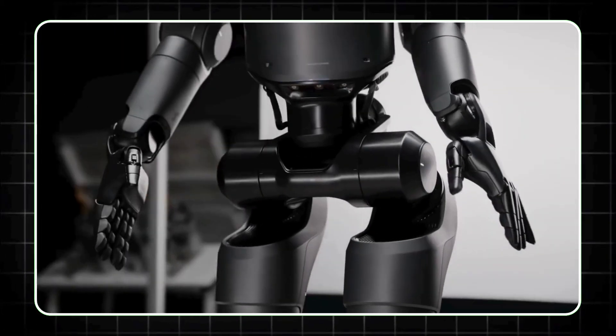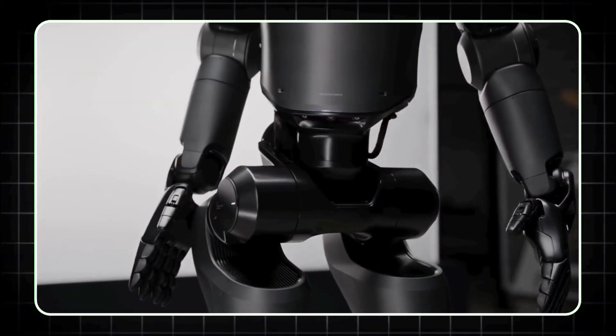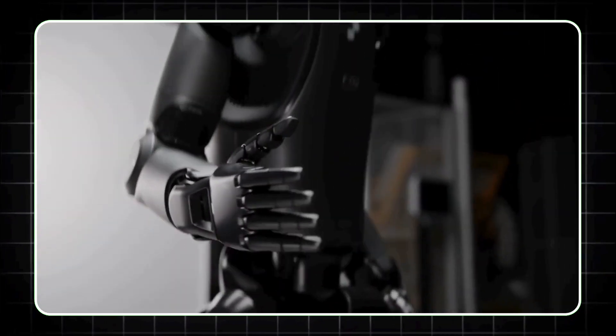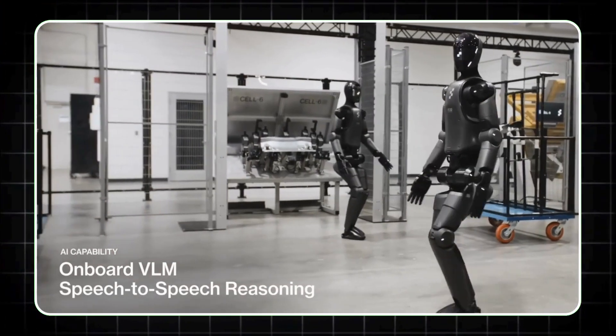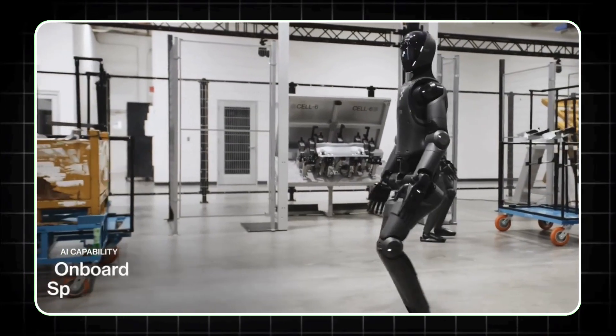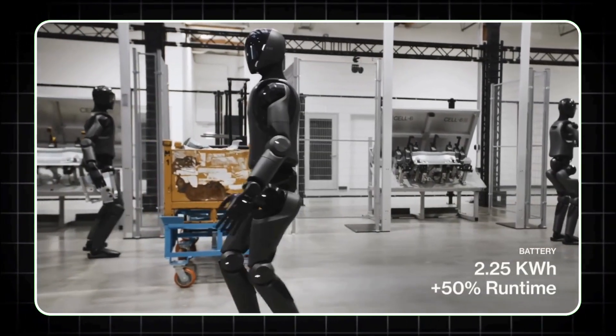What sets Figure 2 apart? Its enhanced AI, boasting three times the computational power of its predecessor, allows for real-time decision-making and interaction. Imagine a robot that can see and understand its environment with six onboard RGB cameras processing visual data to navigate complex spaces.